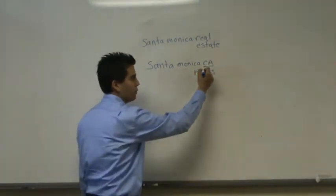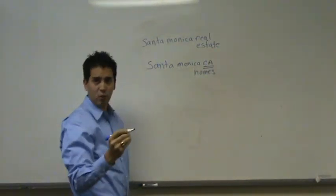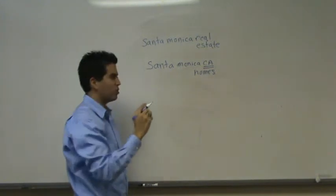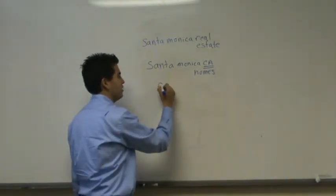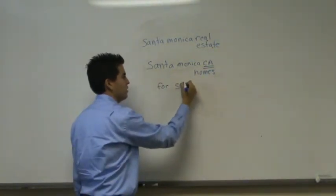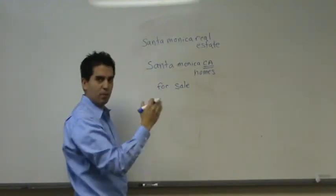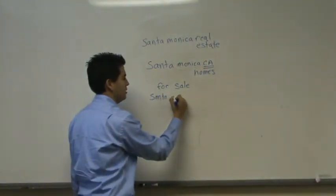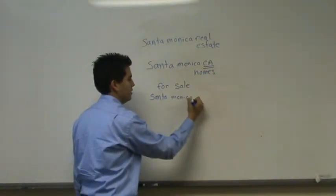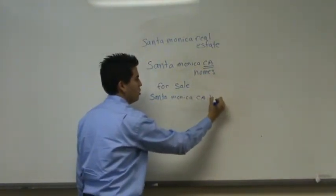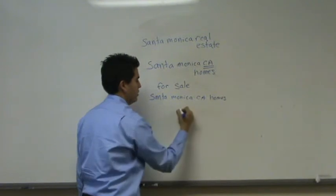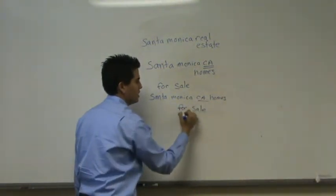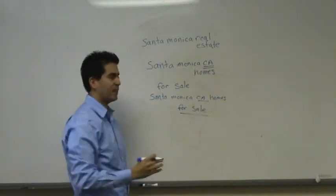This is part of the formula where you start to add what we like to call qualifiers, and the state qualifier is one of them. Then you can add additional qualifiers like 'for sale.' So here's what you start doing — you put these together and you get Santa Monica, CA homes for sale. So what we've done is we've used two qualifiers to make that work.